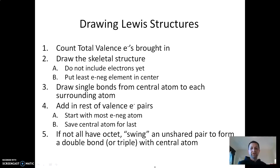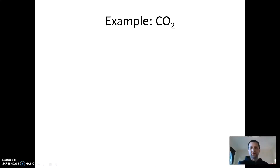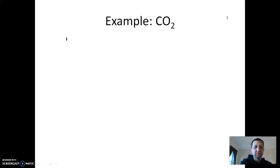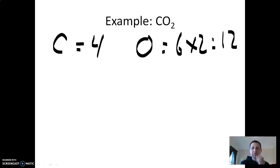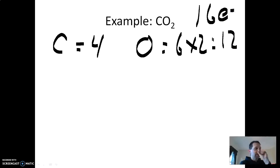Step number one is to count your valence electrons. Students always think they're too cool and they don't do this because they're in honors chem and they think, I don't need to count electrons — I'm past that. You're not. I tell my AP kids, you must count them. That's where the easy mistakes are made. So first thing I do is look at carbon — carbon has four valence electrons. Then I look at oxygen, and oxygen has six. But there are two oxygens in CO₂, so I double it to give me 12. So I have a total of 16 valence electrons.